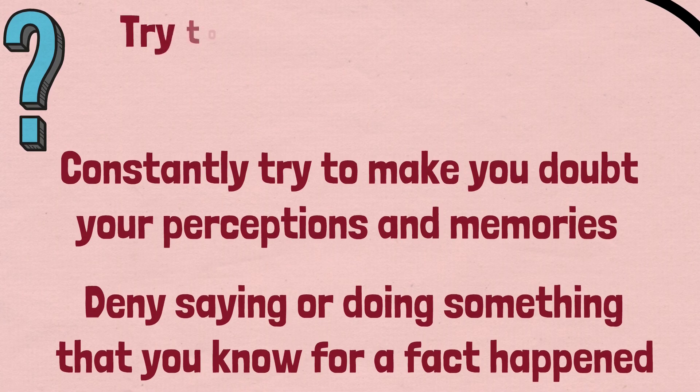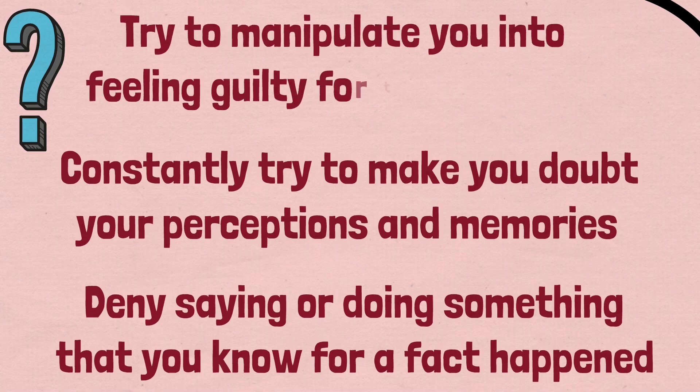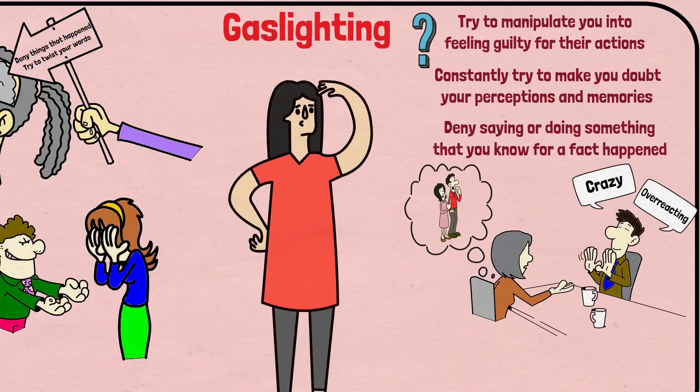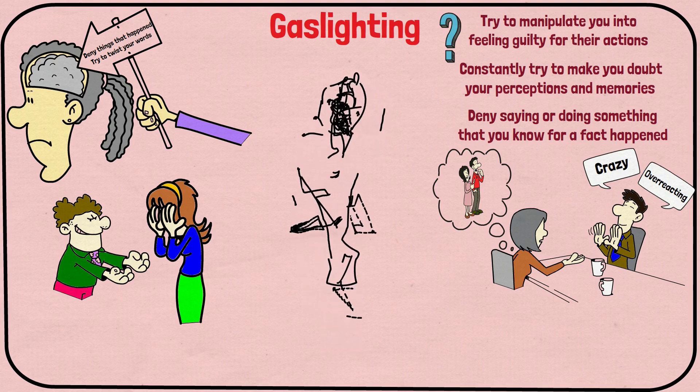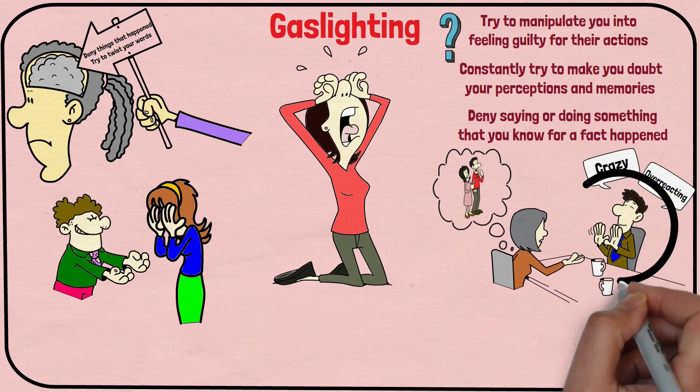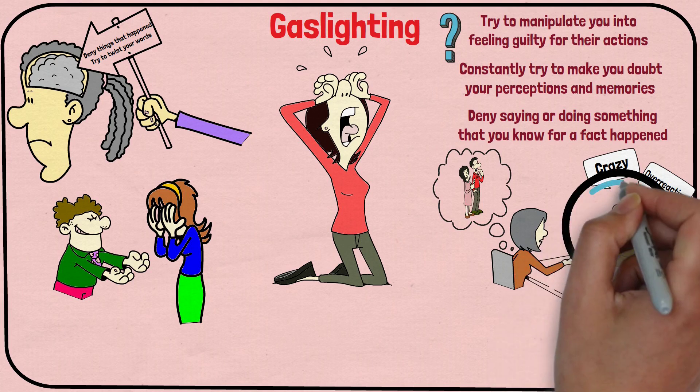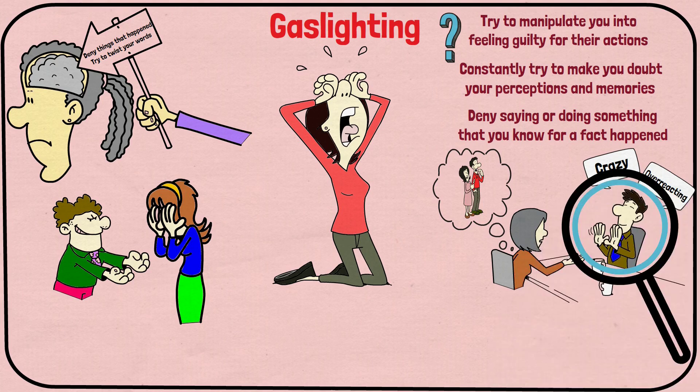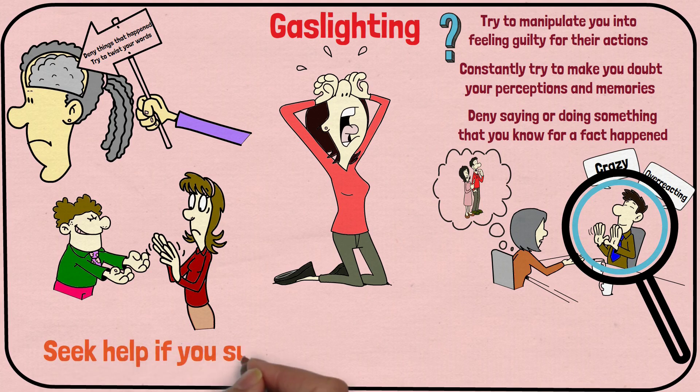Finally, do they try to manipulate you into feeling guilty for their actions? They do this to deflect responsibility and make you feel like you're the one in the wrong. Gaslighting can be very subtle and can be hard to detect, especially if you've been in the relationship for a long time. But it's important to trust your perception and to seek help if you suspect that you are being gaslighted.